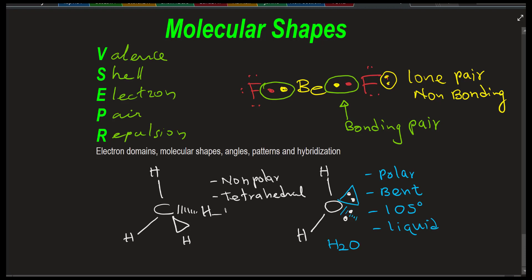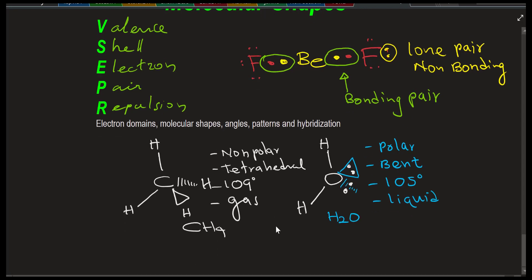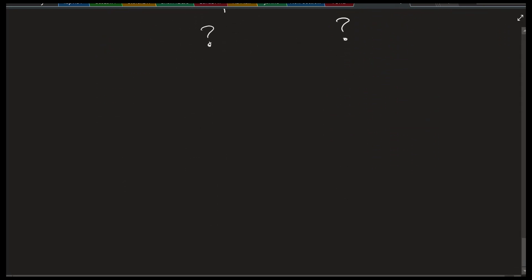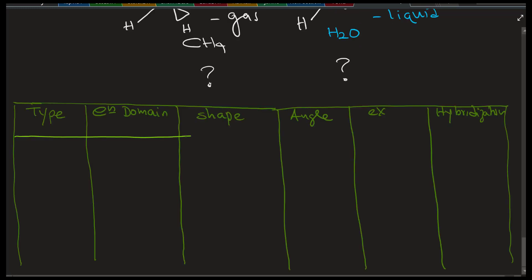Now the other molecule to compare is methane. It is non-polar, tetrahedral in shape, and the bond angles are 109 and it's a gas, CH4. So at the end of this 10 minutes hopefully you should be able to understand and explain logically why these two molecules behave differently and have different qualities and properties.